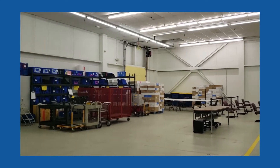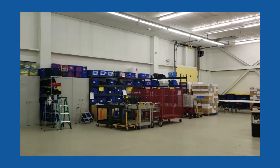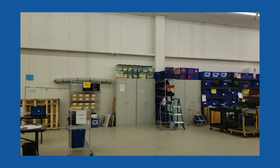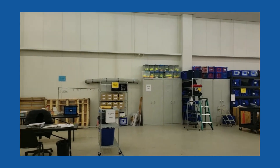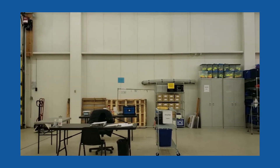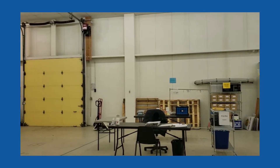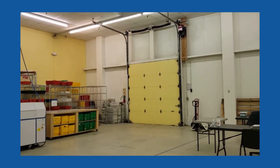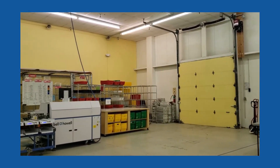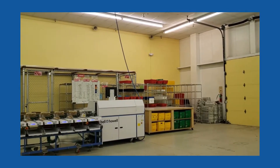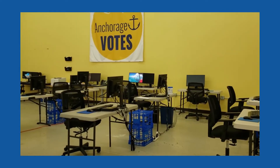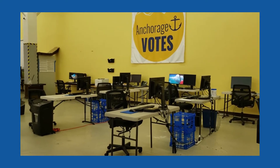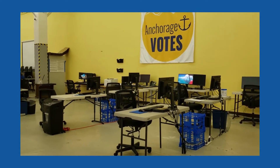The election facility was selected because it is one large open area monitored by security cameras. There is also an intrusion alert system in place when the election center is closed. The election system containing confidential voter information is not connected to the internet. All signatures are checked against signatures in the state of Alaska voter registration system.